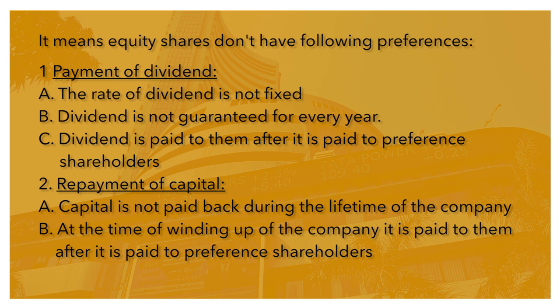Equity shares don't have the following preferences. Number 1: Payment of Dividend. The rate of dividend is not fixed, dividend is not guaranteed for every year, and dividend is paid to equity shareholders only after it is paid to preference shareholders.